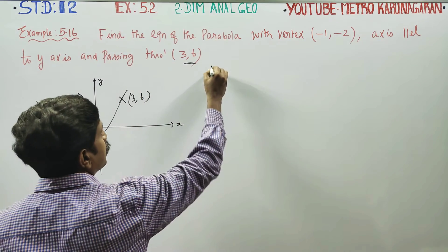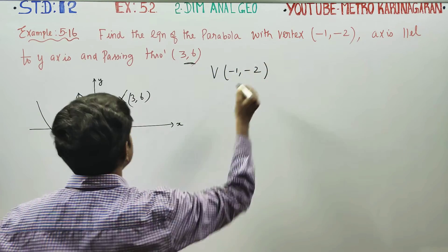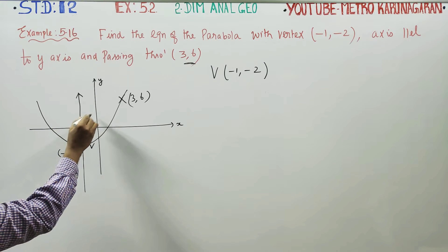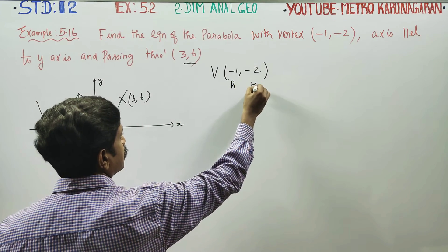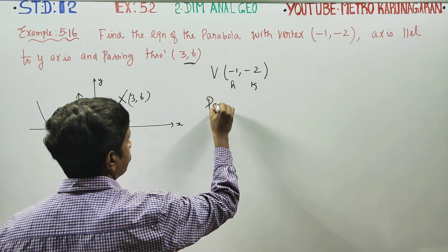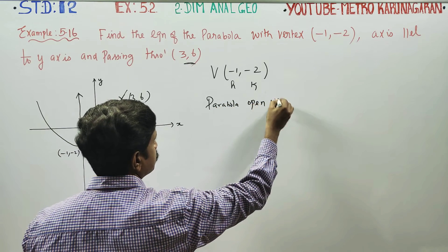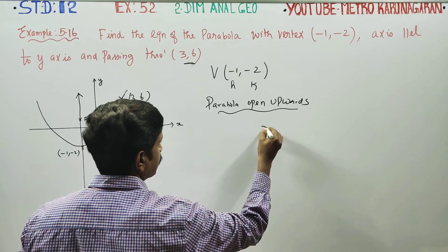Then I know one point is vertex. Vertex is minus 1 comma minus 2. Parabola opens upwards. The formula you can memorize.